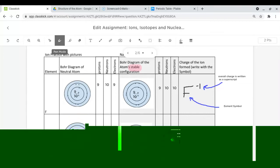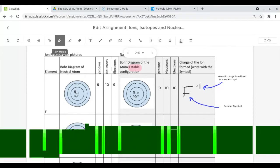Hi everyone, this is Mr. Richmond and for this video I'm going to walk you through how to do an example of slide number two of your most recent ClassKick assignment on ions, isotopes, and nuclear symbols.